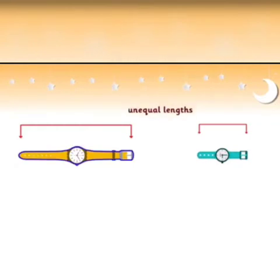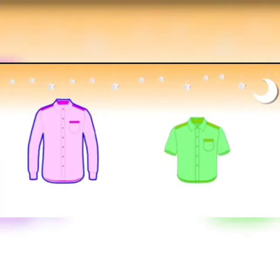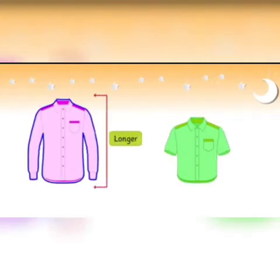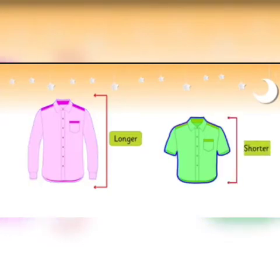Next we have a pair of shirts. Pink shirt is longer than the green shirt, and the green shirt is shorter than the pink shirt.